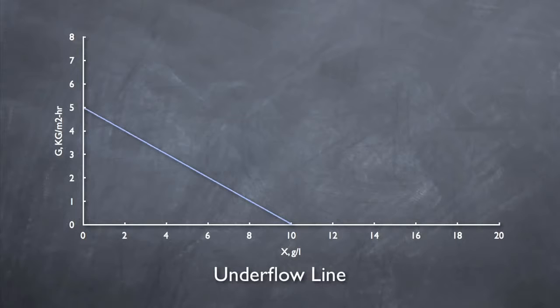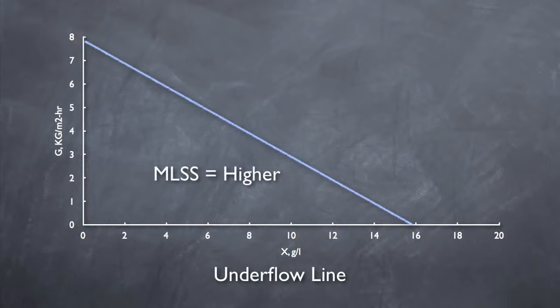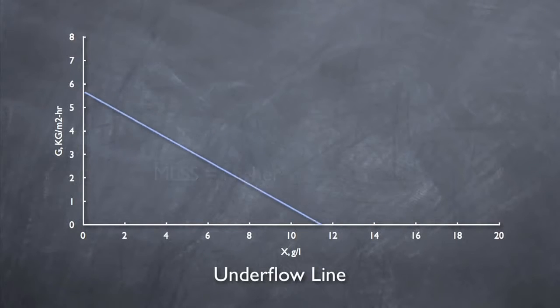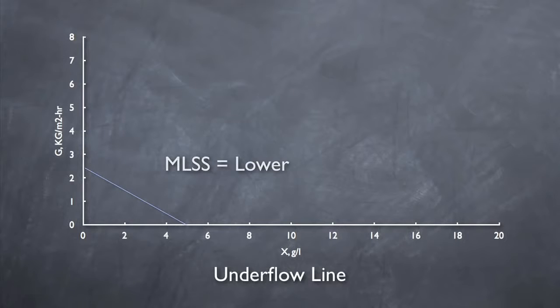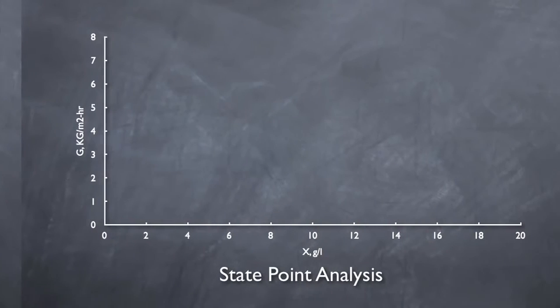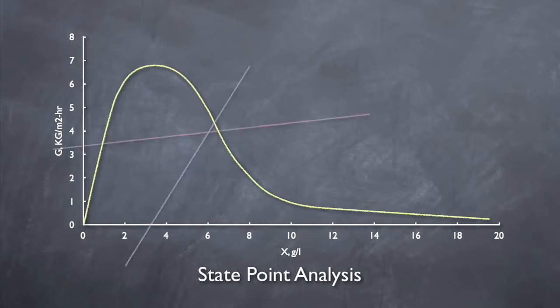Also, the location of this line can be adjusted by changing the solids concentration entering the clarifier. A higher concentration moves the line away from the origin, with the opposite occurring with a lower concentration.